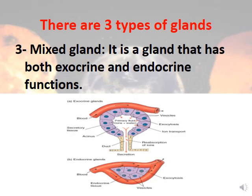The third type is the mixed gland. A mixed gland has both exocrine and endocrine functions. For example, the pancreas has both an endocrine function and an exocrine function.